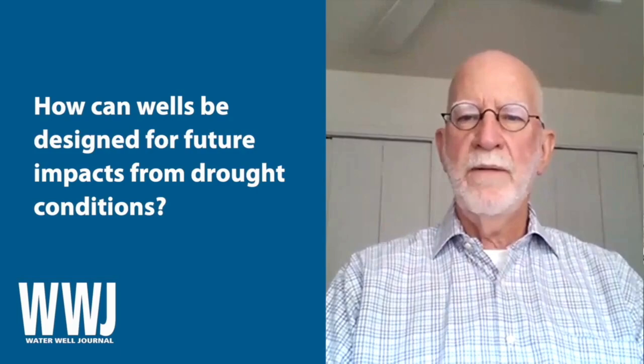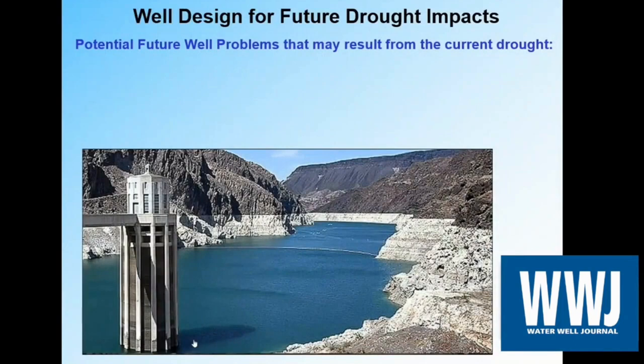I've got a PowerPoint to show this, and I want to share my screen. Here we see a photograph of Lake Mead with the big bathtub ring that most folks have heard about. There's a lot of reduction in the surface water flow otherwise available to states like Nevada, Arizona, California, and some other places. This means that more farmers, power plants, industry, and municipalities are all going to be relying more on groundwater.